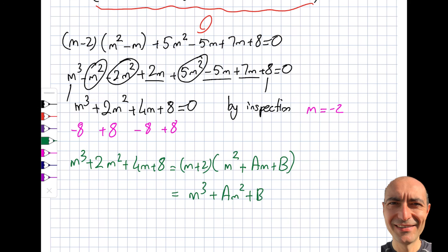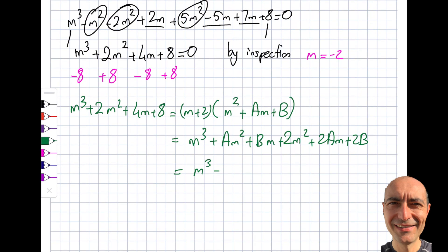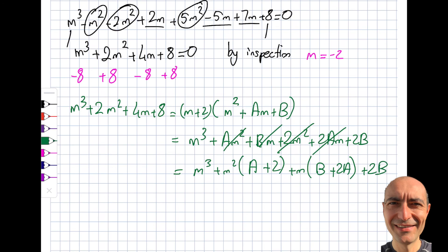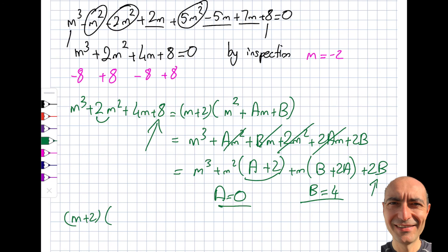Expanding (m+2)(m²+am+b) gives m³ + am² + bm + 2m² + 2am + 2b. Collecting: m² coefficient is (a+2), m coefficient is (b+2a), constant is 2b. Matching to our polynomial: 2b = 8 so b = 4. Then a+2 = 2 so a = 0. Verified: b+2a = 4+0 = 4. So the factorization is (m+2)(m²+4).